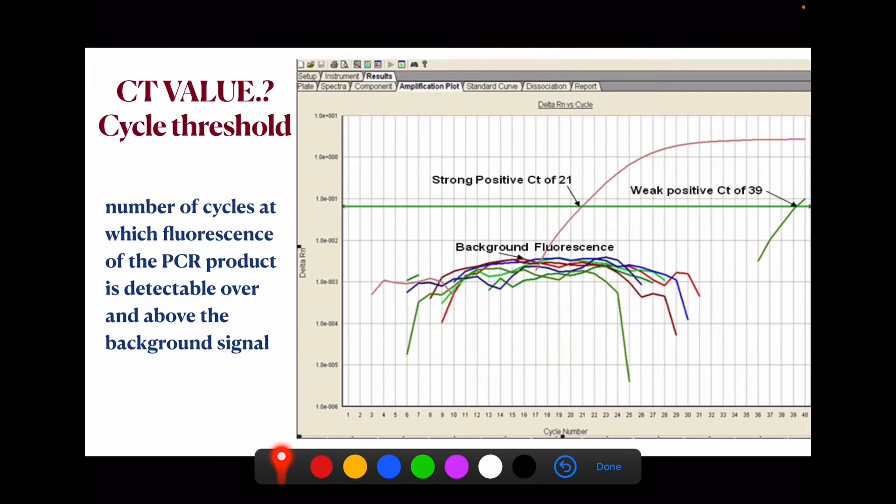In this example we can say that if we have very low viral material in the initial sample, we need so many cycles to reach the detectable level. If we have high viral load in the initial sample, we need a lesser number of cycles to reach the detectable level.